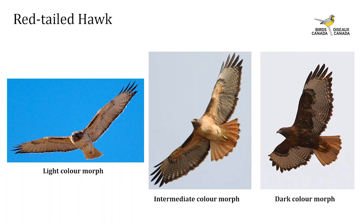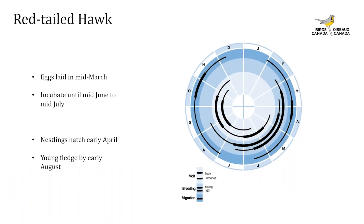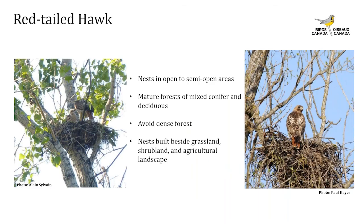In Ontario, red-tailed hawk nest building can begin as early as late February to early March. Eggs are typically laid in mid-March and incubation continues until mid-June to mid-July. Nestlings hatch as early as early April and all young will have fledged by early August. Generally the red-tailed hawk breeds in open to semi-open habitats including mature forests of mixed conifer and deciduous trees near grasslands and shrublands as well as agricultural landscapes. In southern Ontario, nests are usually located in a woodlot near a woodlot edge next to a crop or pasture field.